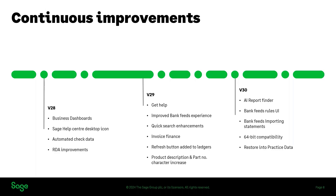Over the years we have listened to your feedback and suggestions and implemented them into the software. For example, in version 28 we introduced business dashboards and remote data access improvements — formerly known as Sage Drive. In version 29, we introduced features such as Get Help, which was a big request from in-product support, and we also introduced improvements to bank feeds. Some of the changes can be as small as a character increase for product description and part numbers.